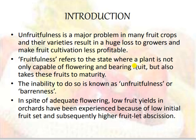Unfruitfulness is a major problem in many fruit crops and their varieties, resulting in a huge loss to growers and making fruit cultivation less profitable. Fruitfulness refers to the state where the plant is not only capable of flowering and bearing fruit but also takes these fruits to maturity. The inability to do so is known as unfruitfulness or barrenness. In spite of adequate flowering, low fruit yield in the orchard has been experienced because of the low initial fruit set and subsequently higher fruit abscission.